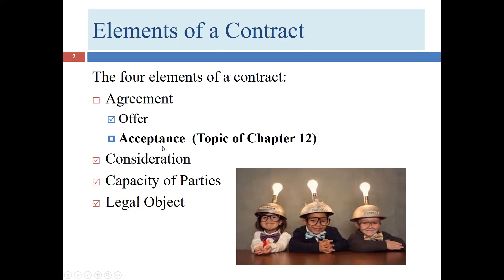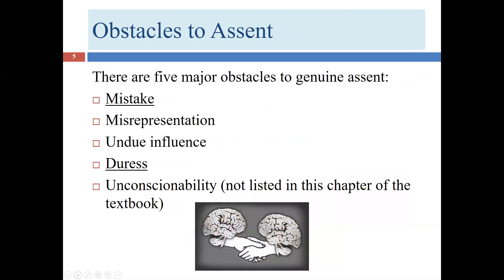When we were in Chapter 9, we talked about what an offer and acceptance are. We talked about the mirror image rule and how they have to mirror each other. But even when they appear to mirror each other, there can still be problems. That's the focus of this chapter — these five obstacles to assent.